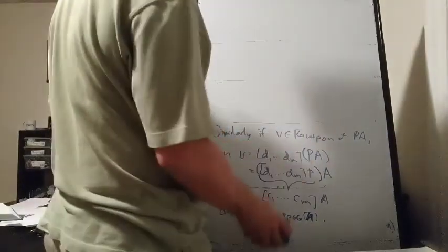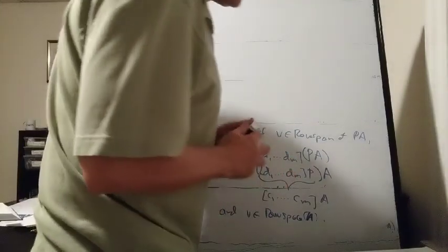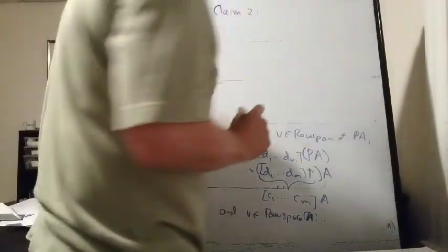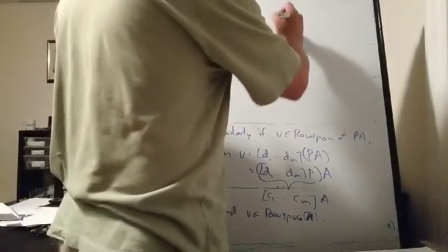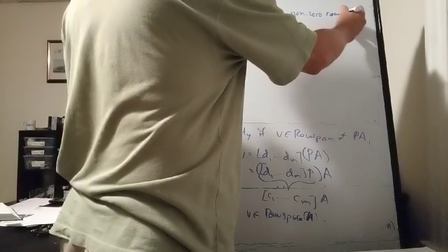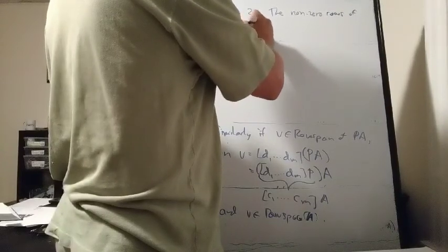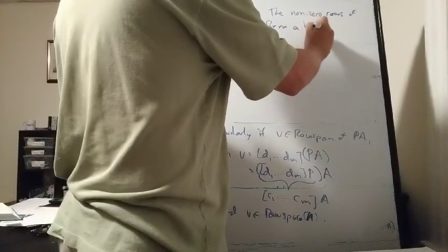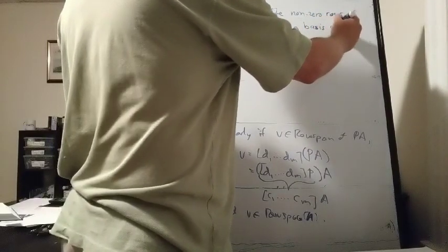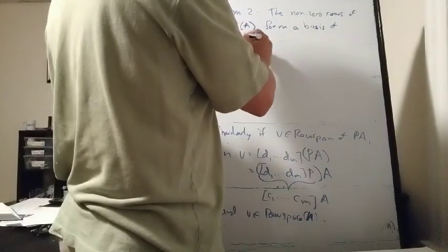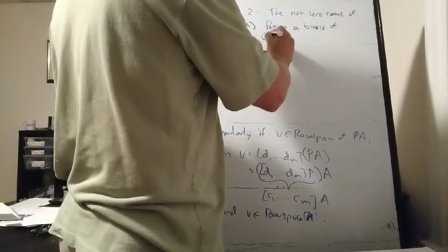The row echelon form of A has a bunch of non-zero rows followed by zero rows. It turns out that if we just take those non-zero rows of the row echelon form, they form a basis of the row space of A. This is Claim 2: the non-zero rows of the row echelon form of A form a basis of the row space of A.